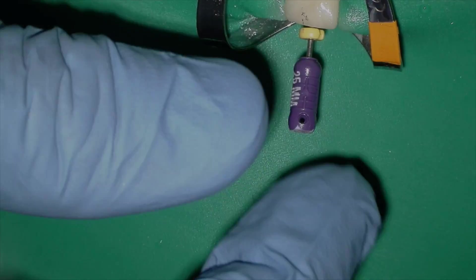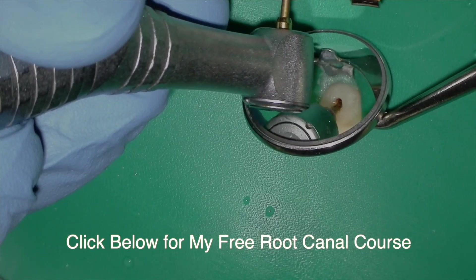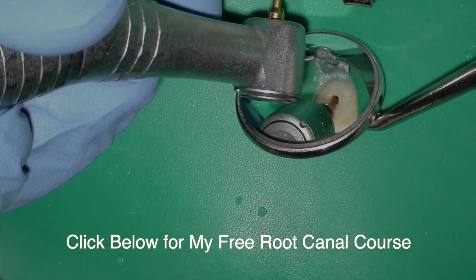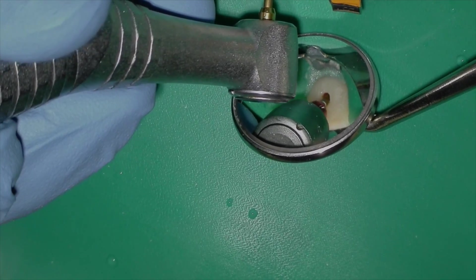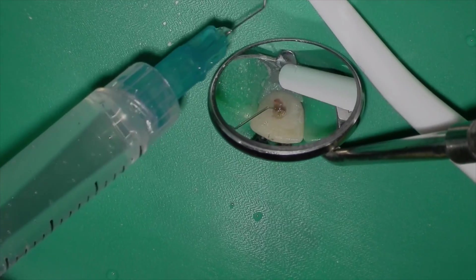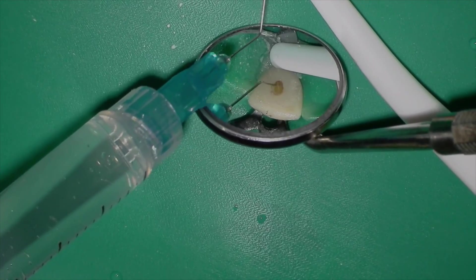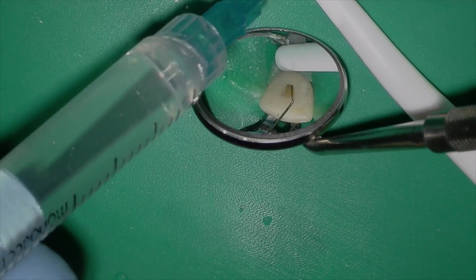So once I get to two-thirds of the root canal, I'm going to get my working length and off we go down to the apical constriction with my Wave One Go primary. So lots of irrigation with full strength hypochlorite because we need to make sure that we dissolve all that vital pulp tissue before we obturate this case.